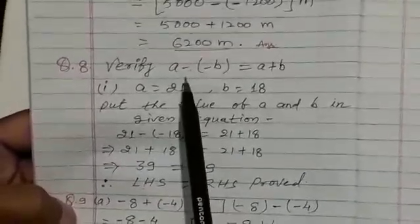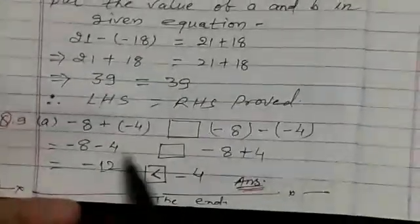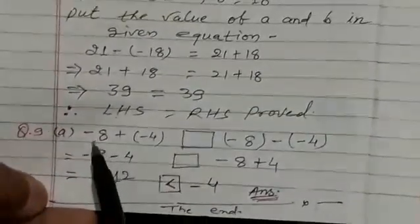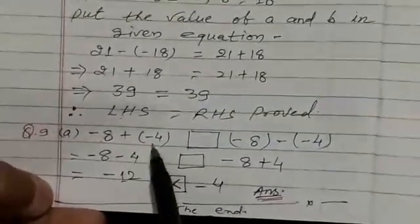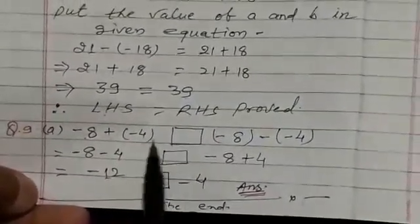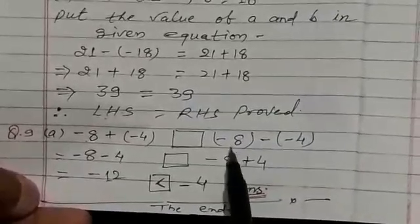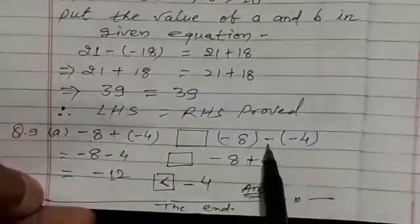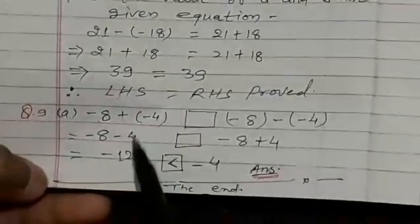Question number 9, minus 8, plus minus 4, is greater than or smaller than, from minus 8, minus minus 4, you solve it.